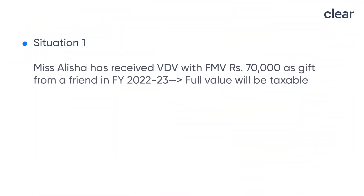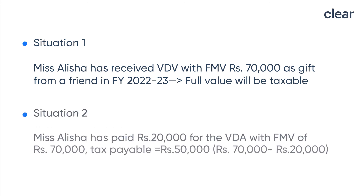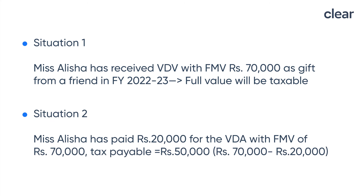For example, suppose Miss Alicia has received a digital asset worth ₹70,000 as a gift in financial year 2022-23. She must show such amount under 'Income from Other Sources' and pay tax on the same. However, if Miss Alicia had paid ₹20,000 as consideration for a digital asset worth ₹70,000 — i.e., the payment is less than the FMV — then she would have to pay tax only on the balance of ₹50,000.